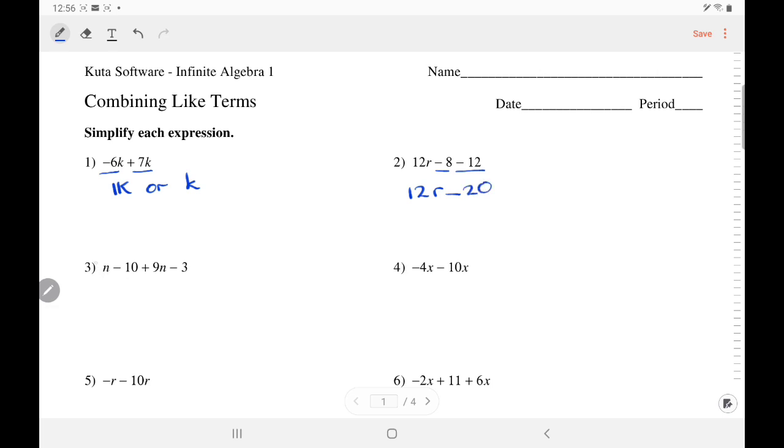Over here, there's an invisible 1. Add the 1n and the 9n together, 10n. Add the negative 10 and the negative 3. It got more negative to negative 13.